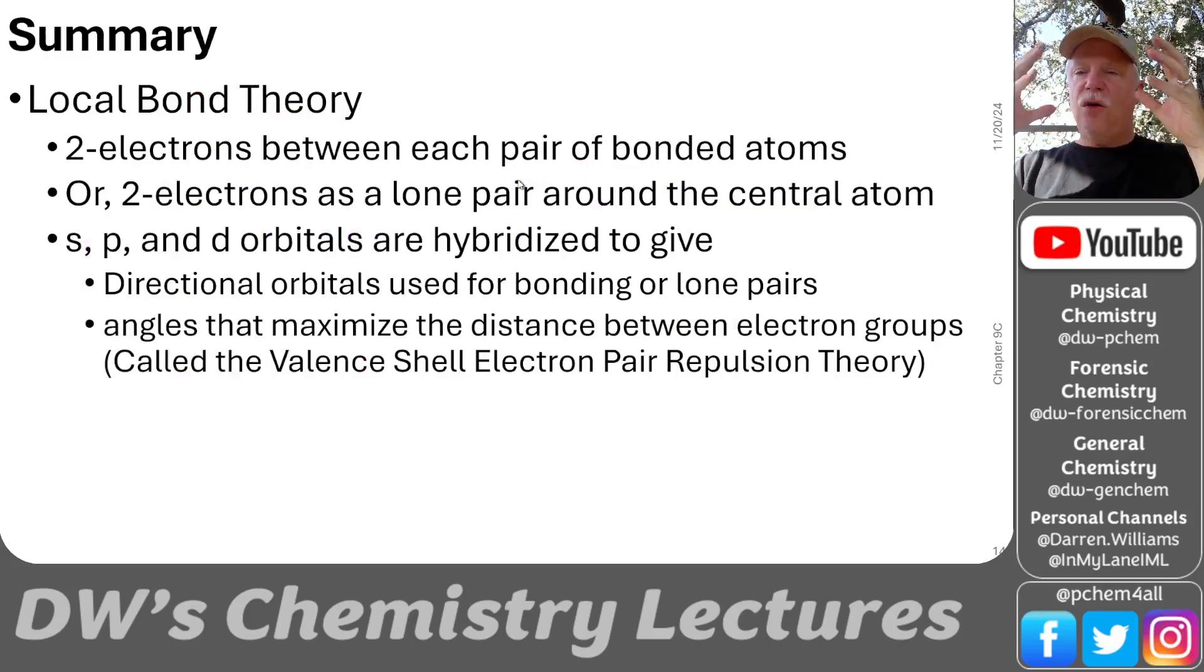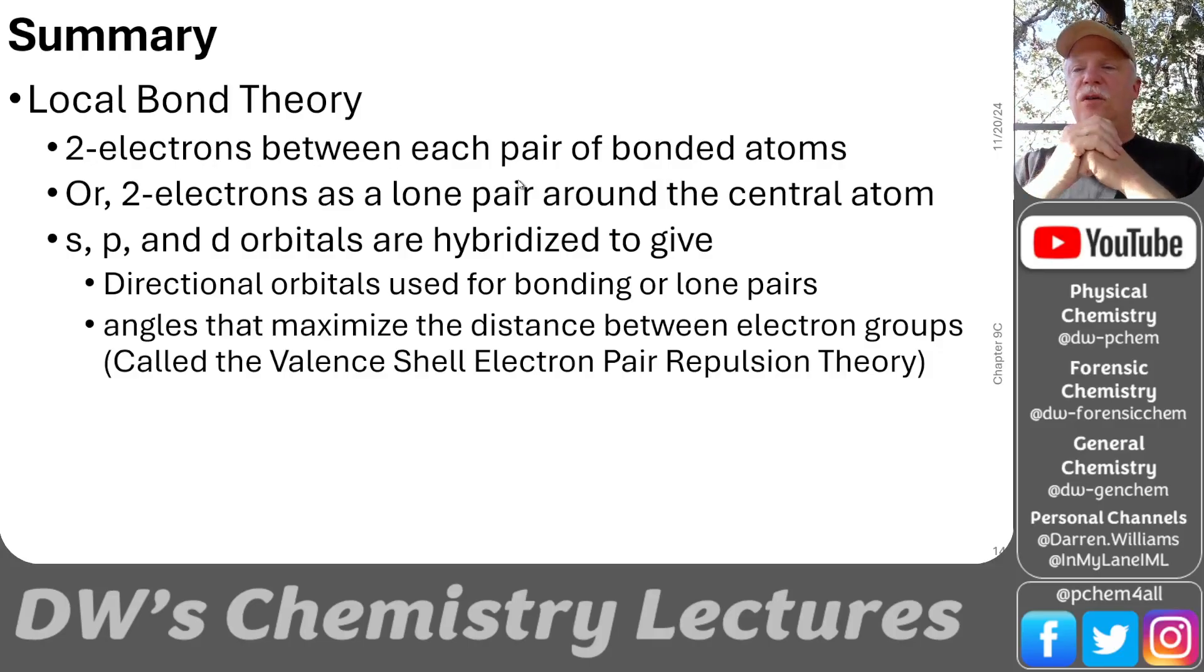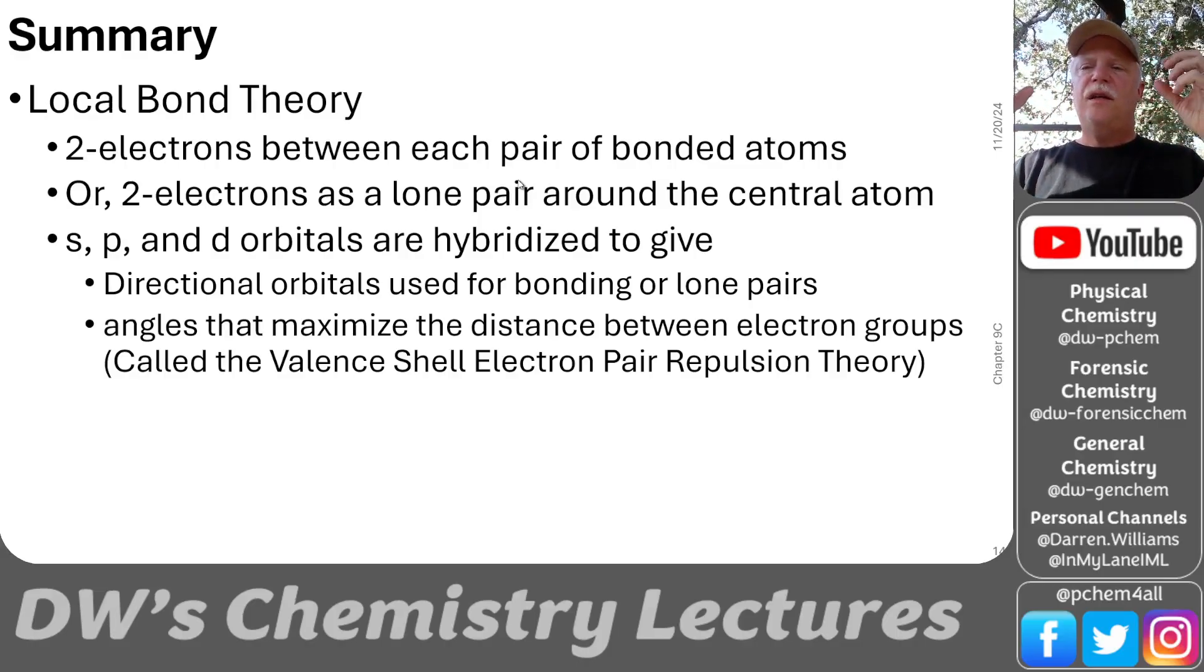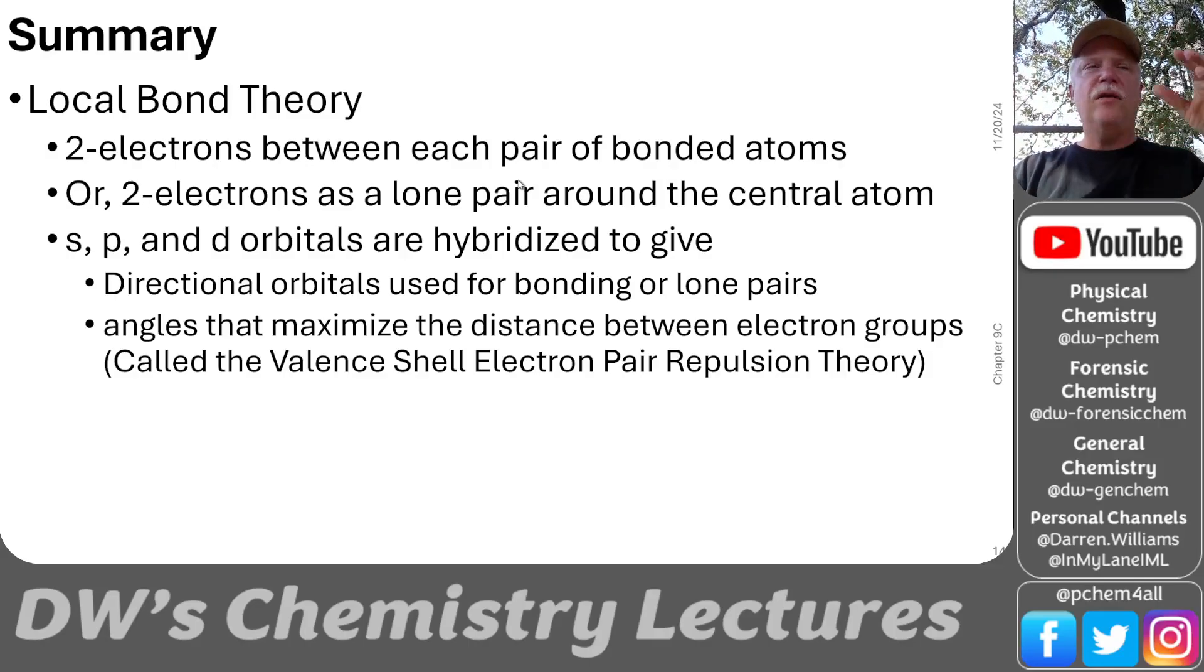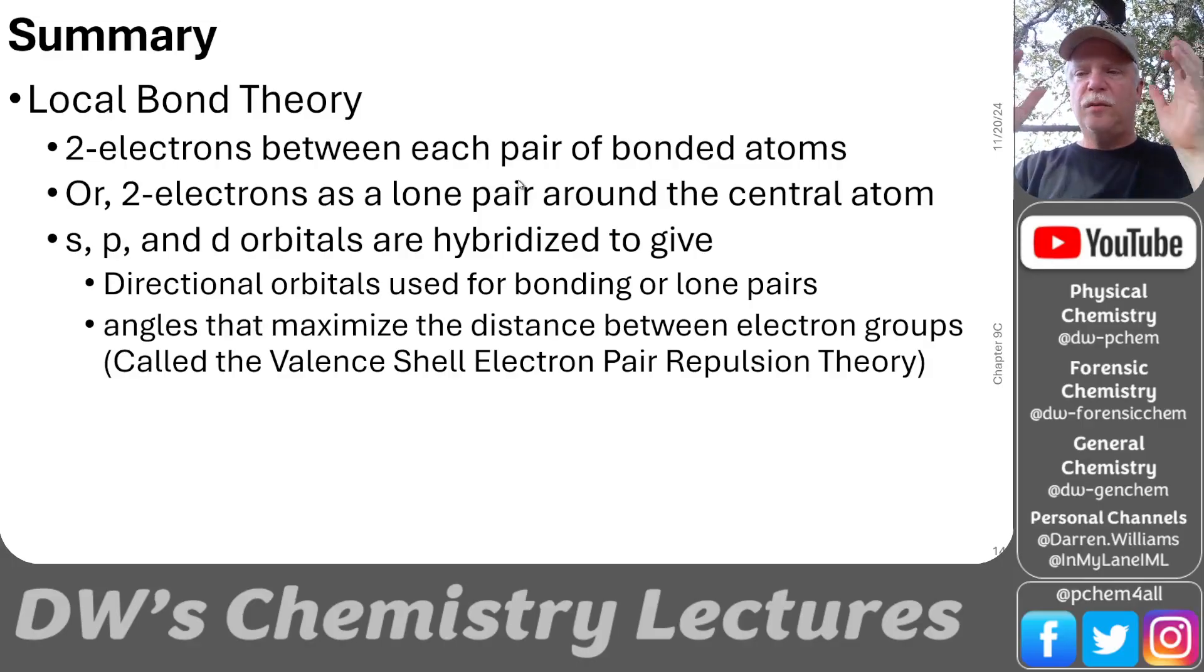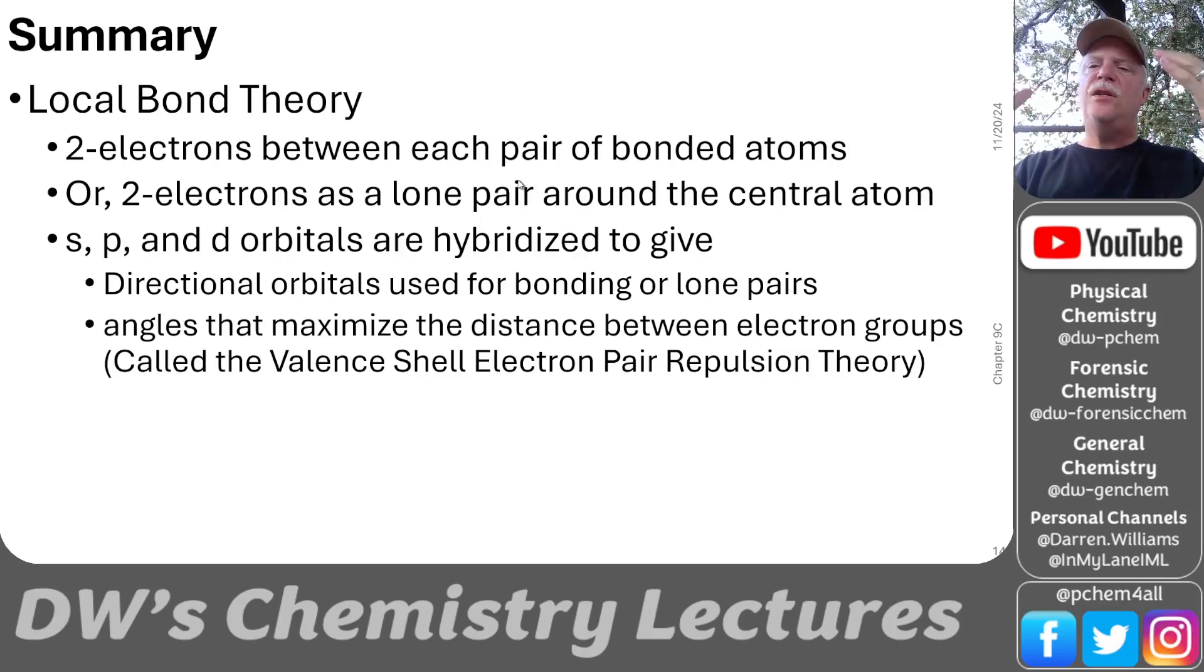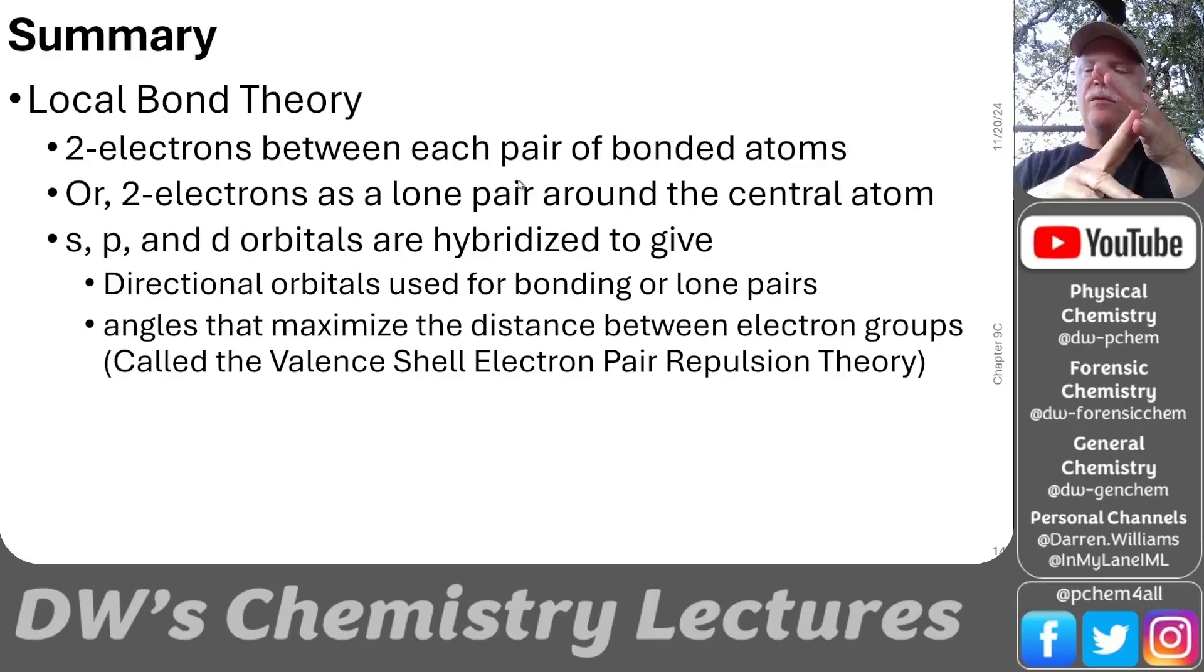So in summary, this is local bond theory. There's two electrons in this theory between each pair of bonded atoms. Or two electrons as a lone pair around that central atom. And that we hybridize or mix the s, p, and d orbitals to give the directions for the bonding and lone pairs that maximize the distance between those groups. And that's called the valence shell electron pair repulsion theory. We want to maximize the angles to get those electron pairs as far away as possible. And so this is just trying to connect the VSEPR theory to the atomic orbitals that we learned earlier when we were doing the electron configurations. Those orbitals are mixed together to make these hybrids that can go in the angle directions that we need them to go so we can come up with an accurate structure.